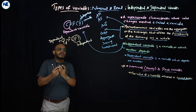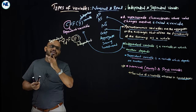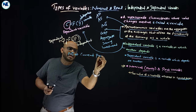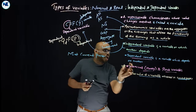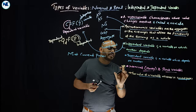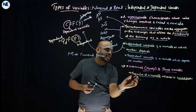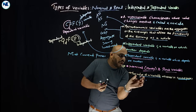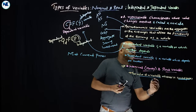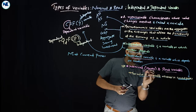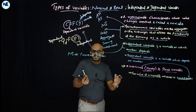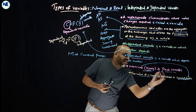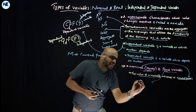Nominal national income, or national income at current prices, is the key example of a nominal or money variable. The value of a variable measured in current prices is known as a nominal variable. It is also known as a money variable.